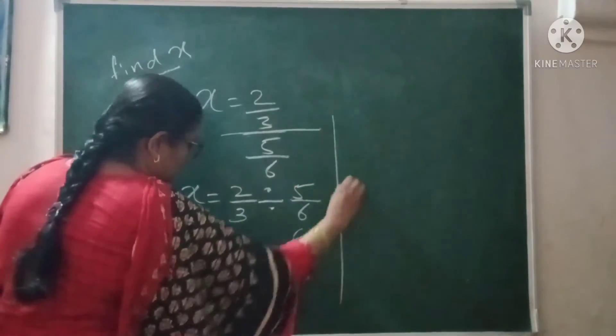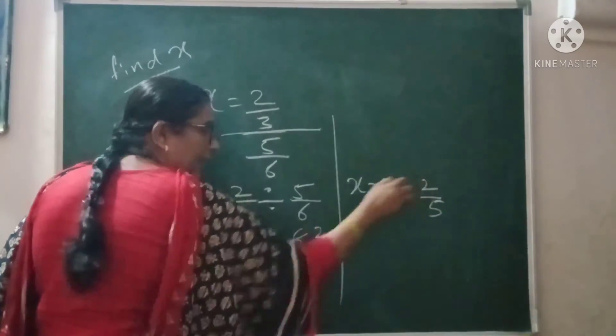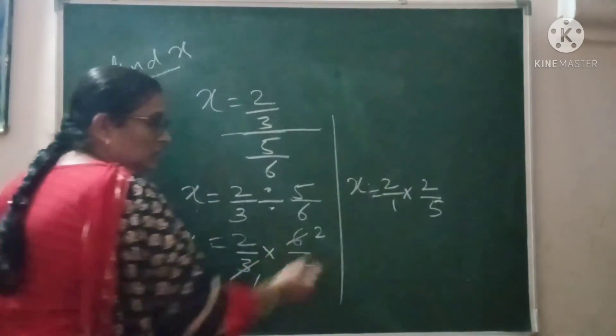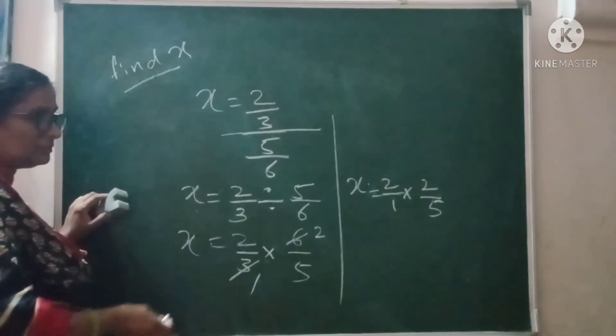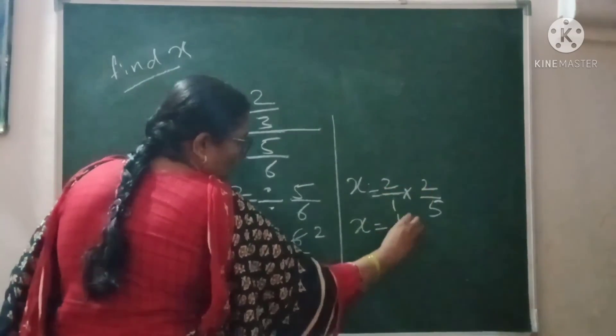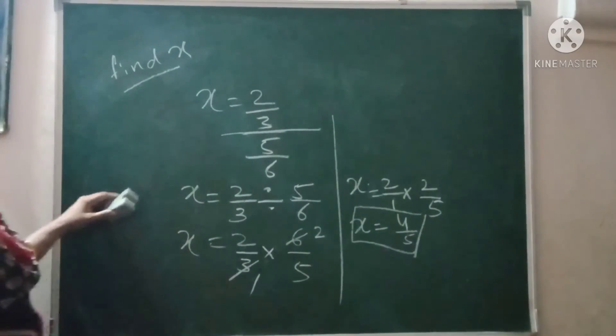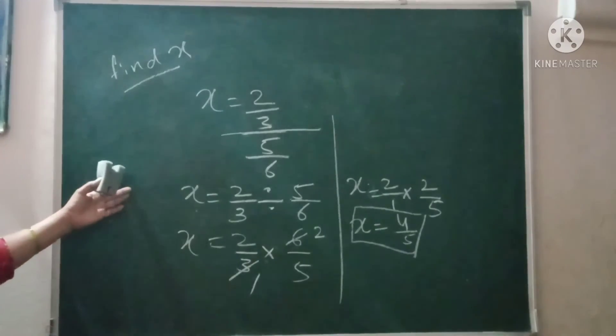So what you got here? x is equal to, you can write 2 upon 1 into 2 upon 5. Most of the students get confused. Slowly solve the problem. So 2 times 2 is 4, 1 times 5 is 5. This is the solution. This way you can solve and clear your doubts.